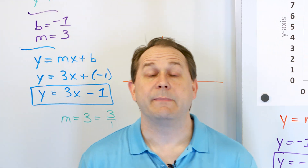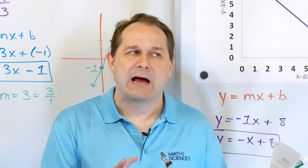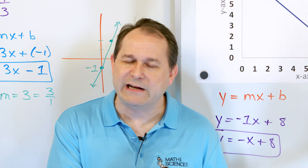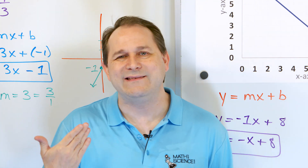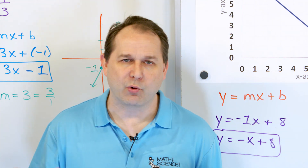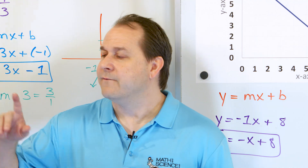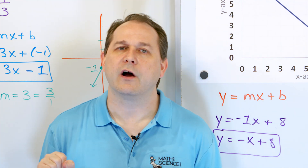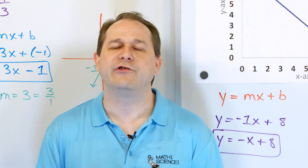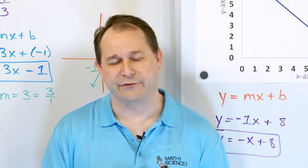So here we've gone backwards. Instead of graphing something, I'm giving you a graph or information and asking you to write down the equation of the line. It's an important skill. Follow me on part two — we'll continue working on this skill of writing equations using the slope and the y-intercept.